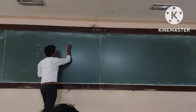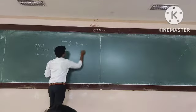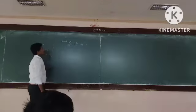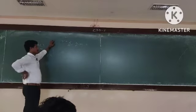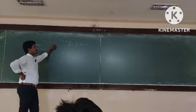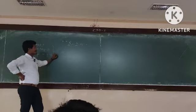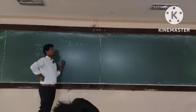d square y by dx square minus 8 into dy by dx plus 15y is equal to 0. This is higher order linear differential equation.